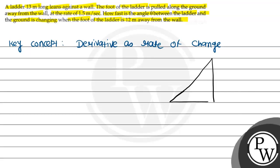This is a right angle triangle. The ladder and the ground form angle theta in between. Let's label the points: this is A, this is B, and this is C. The length of the ladder given is 13 meters. The distance along the ground away from the wall is x, and y is the height where the top of the ladder touches the wall. Theta is the angle between the ladder and the ground.